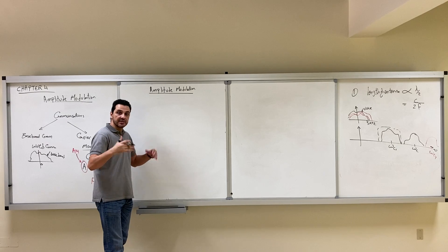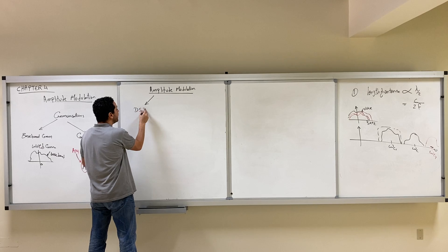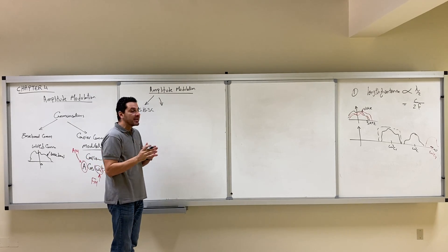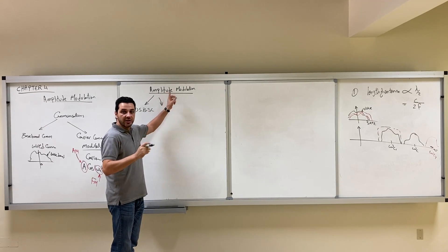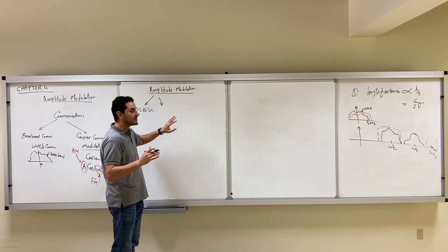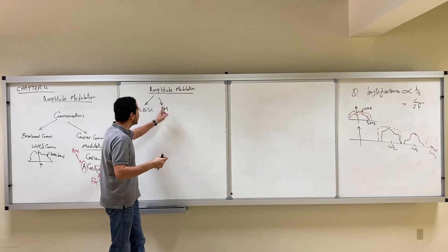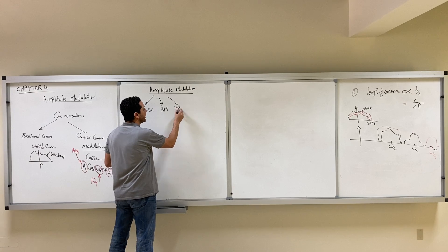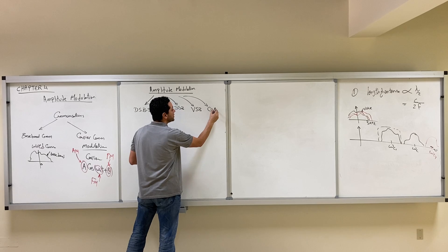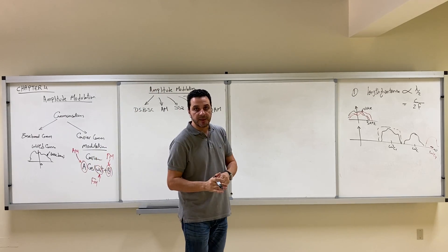Amplitude modulation has many types that we are going to study. The first type is called double sideband suppressed carrier. The second type is also called amplitude modulation — it is a subcategory of the big amplitude modulation technique, and we will refer to it as AM. We will also study single sideband modulation, vestigial sideband modulation, and quadrature amplitude modulation. All of these are subcategories of amplitude modulation.